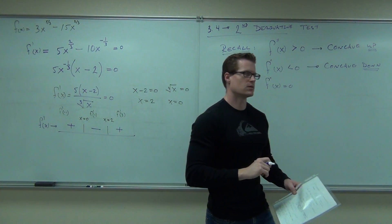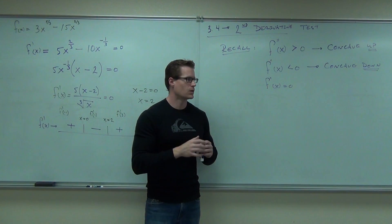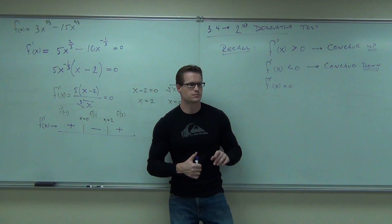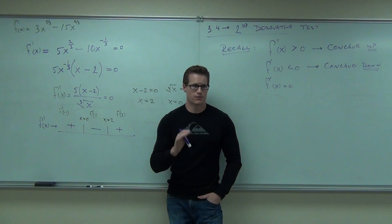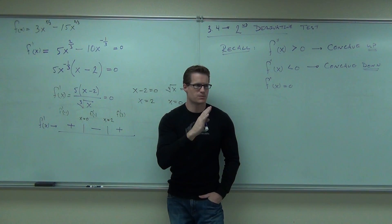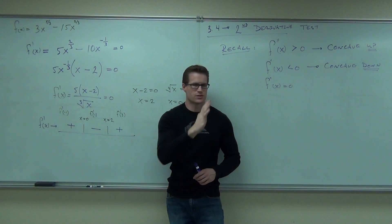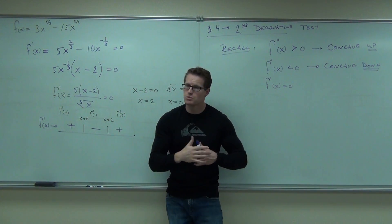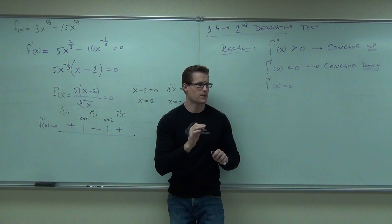What would happen if your second derivative equaled zero? It's a possibility that you're changing concavity there. If your second derivative is positive, you're definitely concave up. If your second derivative is negative, you're definitely concave down. If you switch from concave up to concave down, somewhere in there the second derivative must equal zero — that could be a switch in concavity. Does it have to be? Not necessarily — you need to check for it. But it's a possible concavity change.